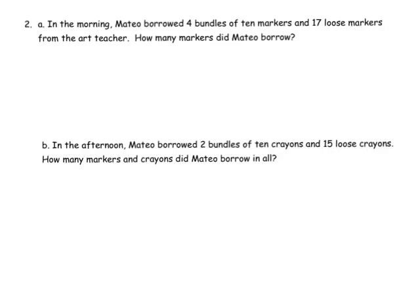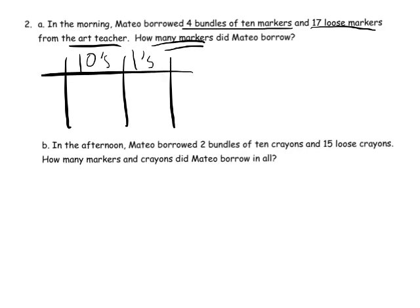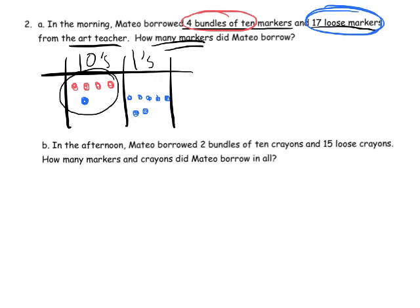Our last problem: in the morning, Mateo borrowed 4 bundles of 10 markers and 17 loose markers from the art teacher. How many markers did he borrow? In our place value chart — tens and ones — he borrowed 4 bundles of 10, so that's 4 in the tens column. He also borrowed 17 loose markers, which is 1 in the tens column and 7 in the ones column. We can see he has 5 in the tens column and 7 in the ones column, so he borrowed 57 markers.